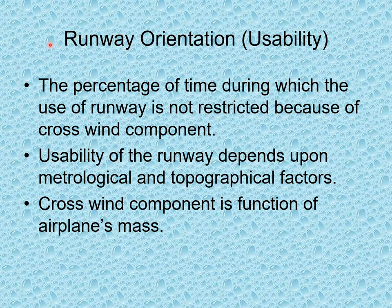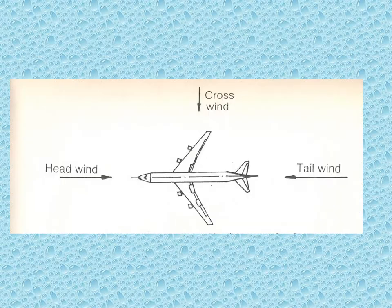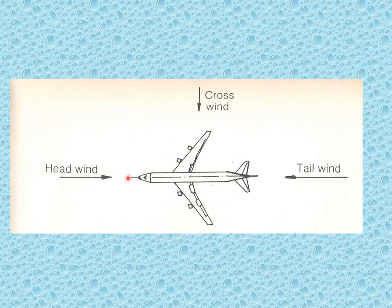Now we discuss runway orientation and the concept of usability — the percentage of time during which use of the runway is not restricted due to the crosswind component. Usability depends upon meteorological and topographical factors; the crosswind component is a function of the airplane's mass. If wind blows opposite to the direction of movement it is headwind; in the direction of movement it is tailwind; and wind coming across is crosswind.